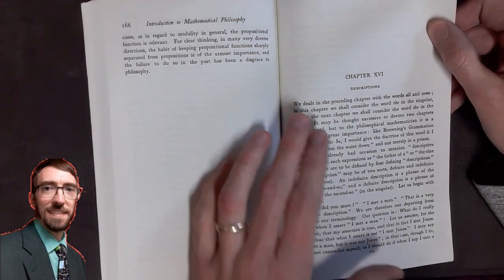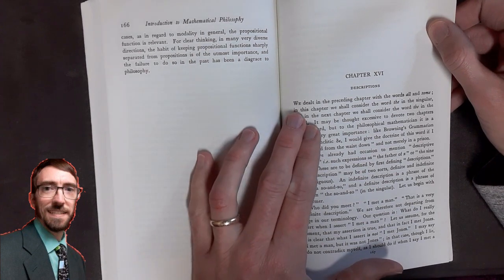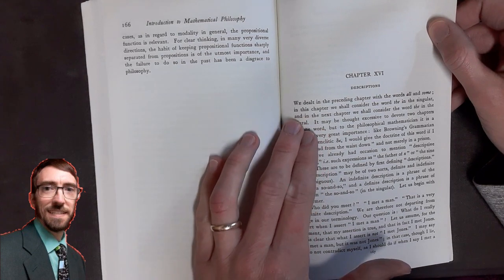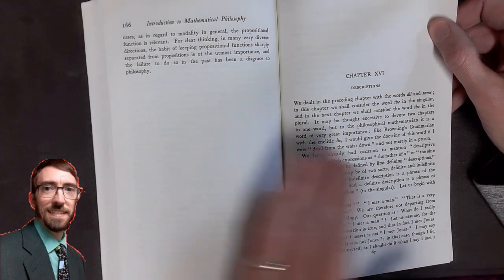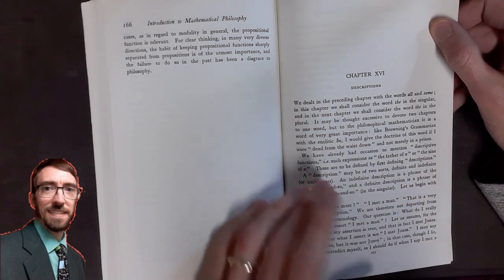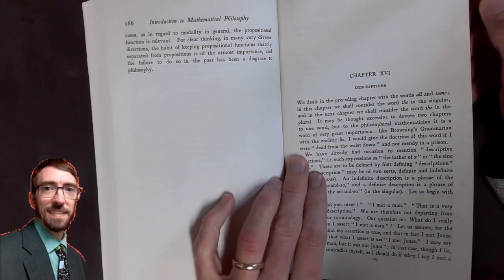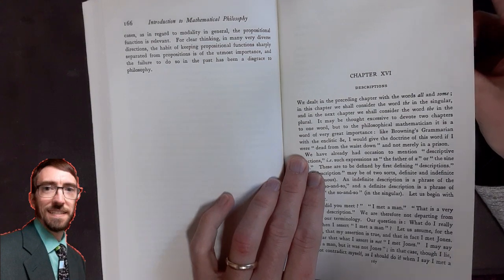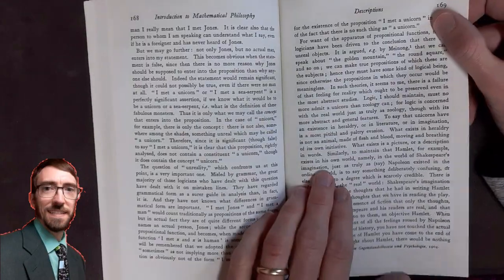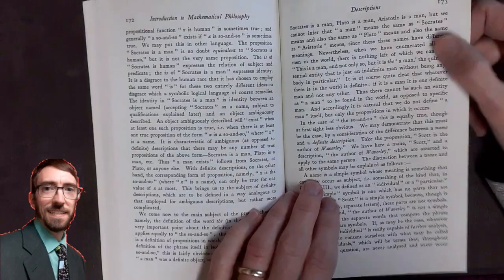It's interesting, chapter 16 descriptions, we see that it opens saying that this chapter, we will consider the word the in the singular, and in the successive chapter, we're going to see the word the in the plural form. So that's the kind of depth we're looking at when we look at Bertrand Russell getting to the foundational ideas in mathematics. We have two chapters on what the is going to mean to us.